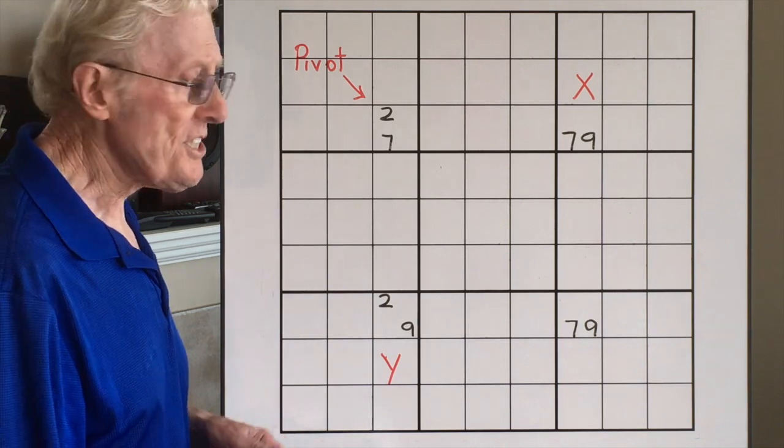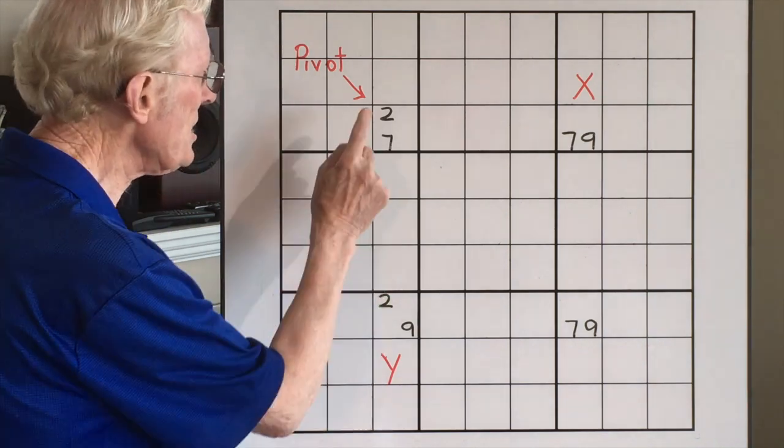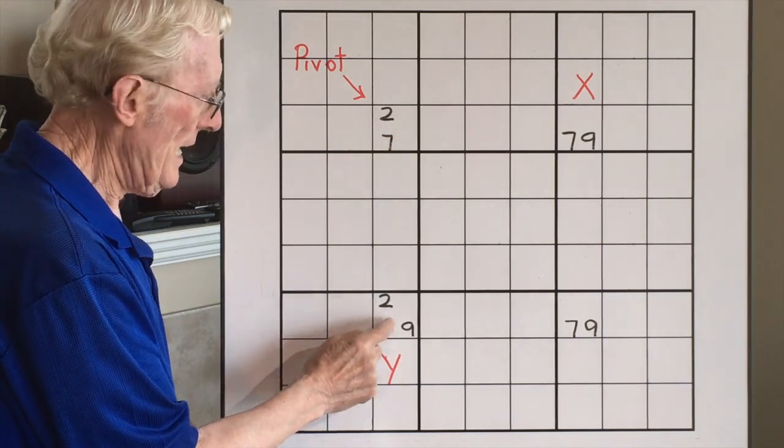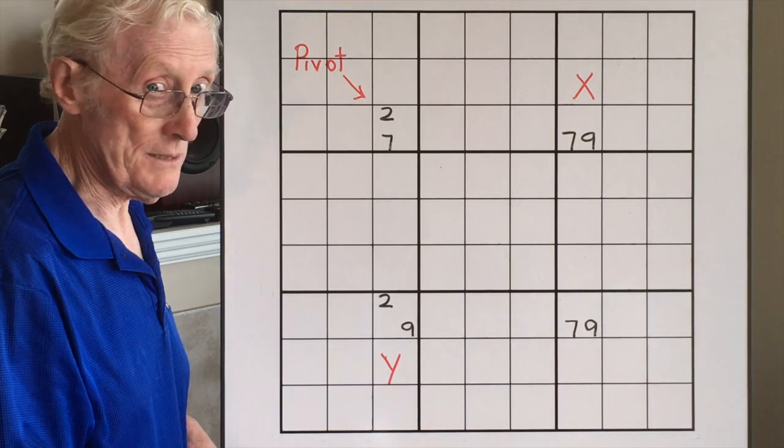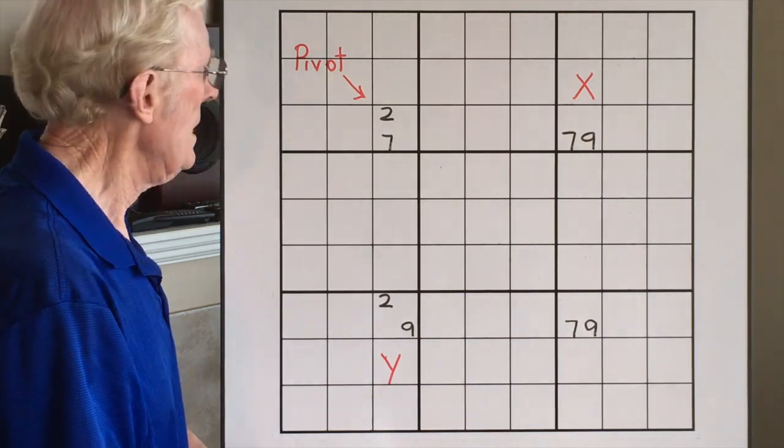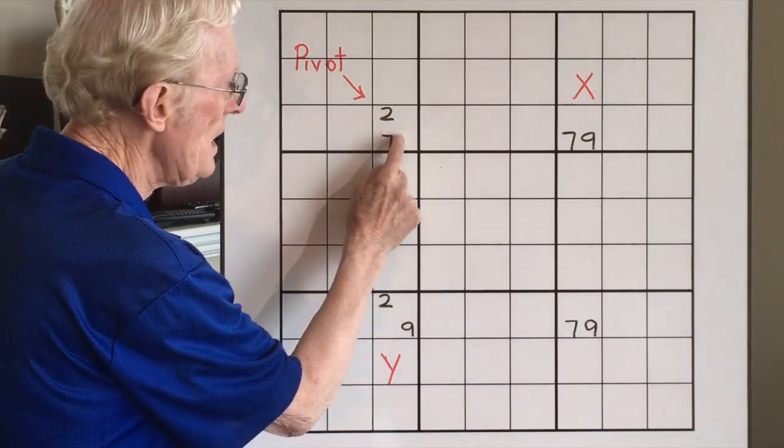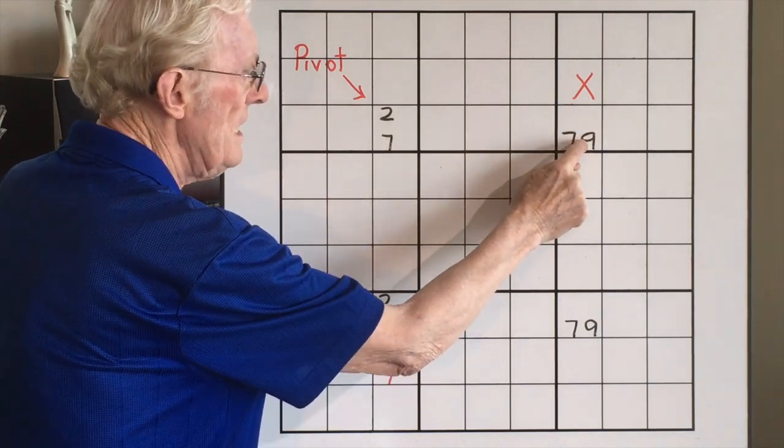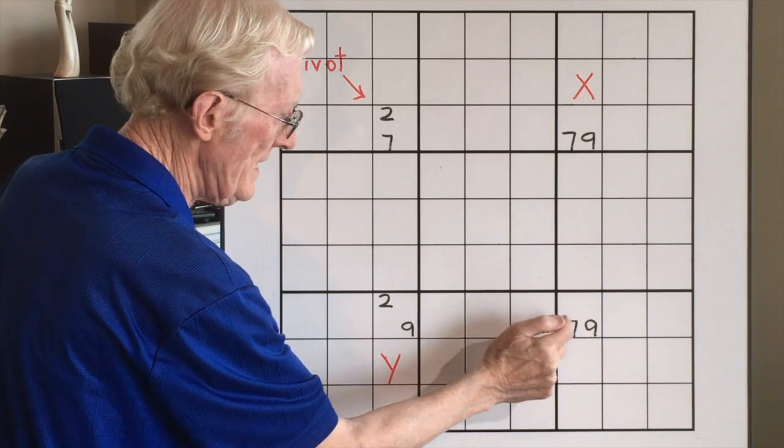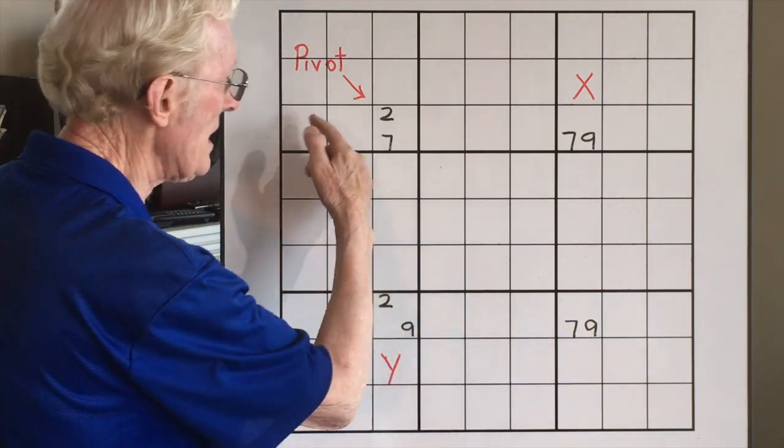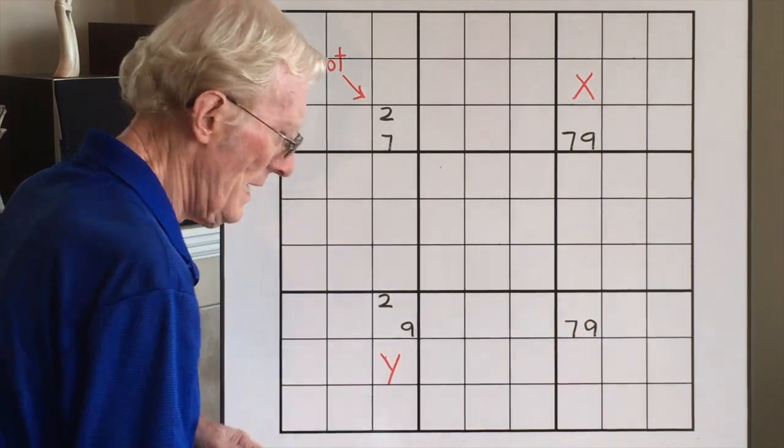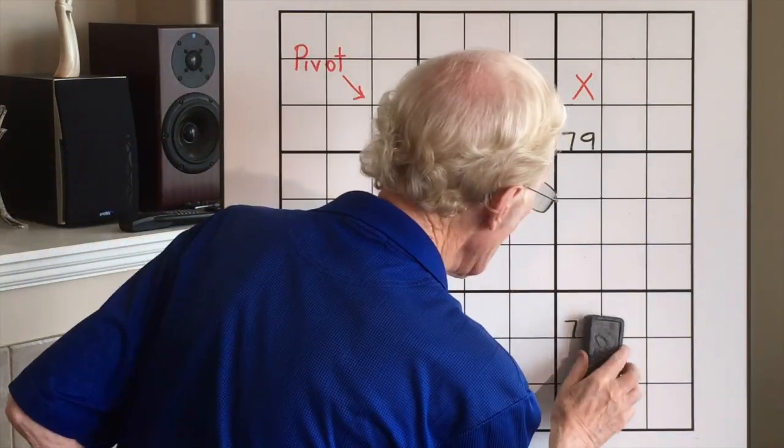Now this is the way it works. If this is a 2 then this must be a 9, and if that is a 9 that cannot be a 9, it has to be a 7. If this is a 7 this has to be a 9, and if that is a 9 then this still cannot be a 9, it has to be a 7. So it doesn't matter this way or this way, that has to become a 7. And that's it in a nutshell.